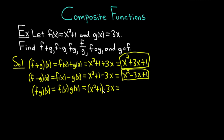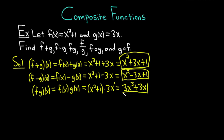Now we can actually perform the multiplication — just distribute the 3x. 3x times x squared: there's a 1 here on the exponent, so you add it, giving you 3x cubed. And 3x times 1 is 3x. So (f·g)(x) = 3x³ + 3x.